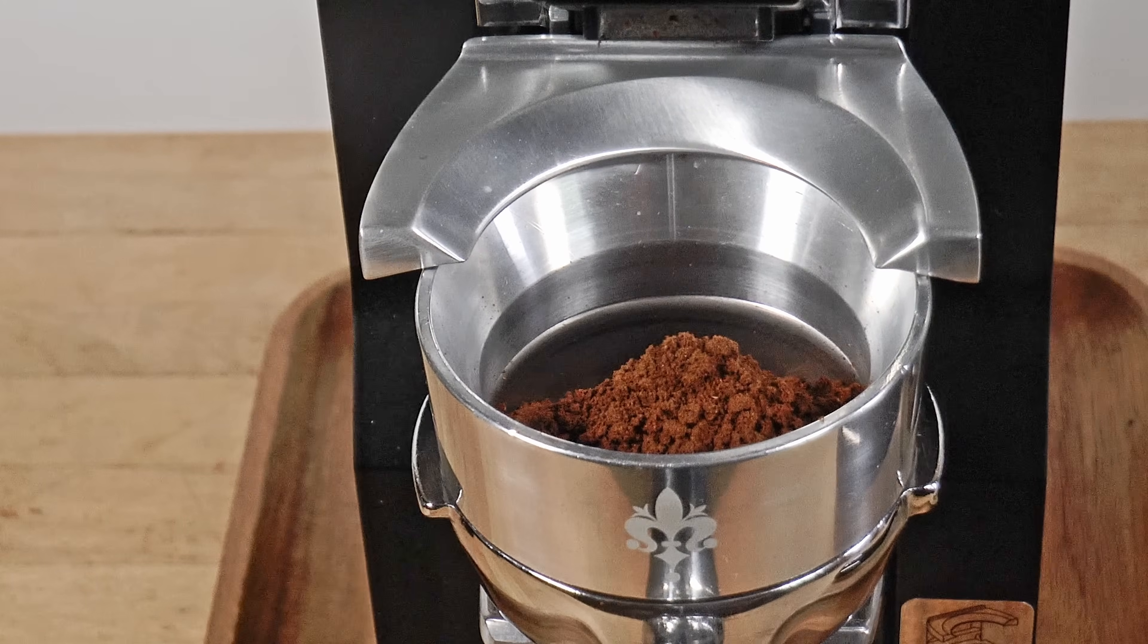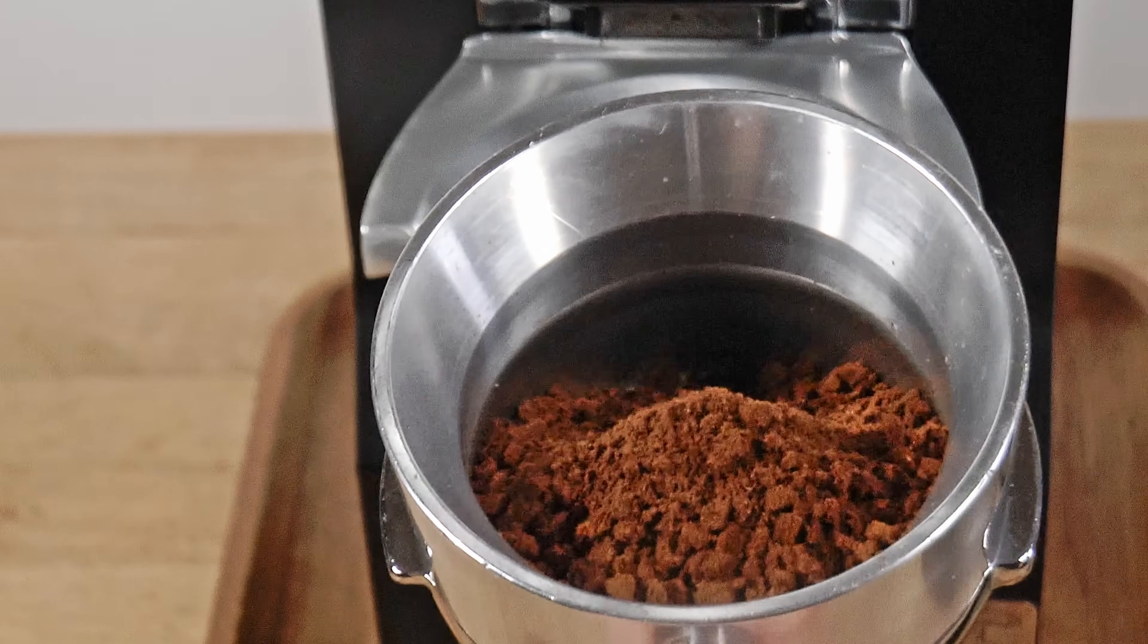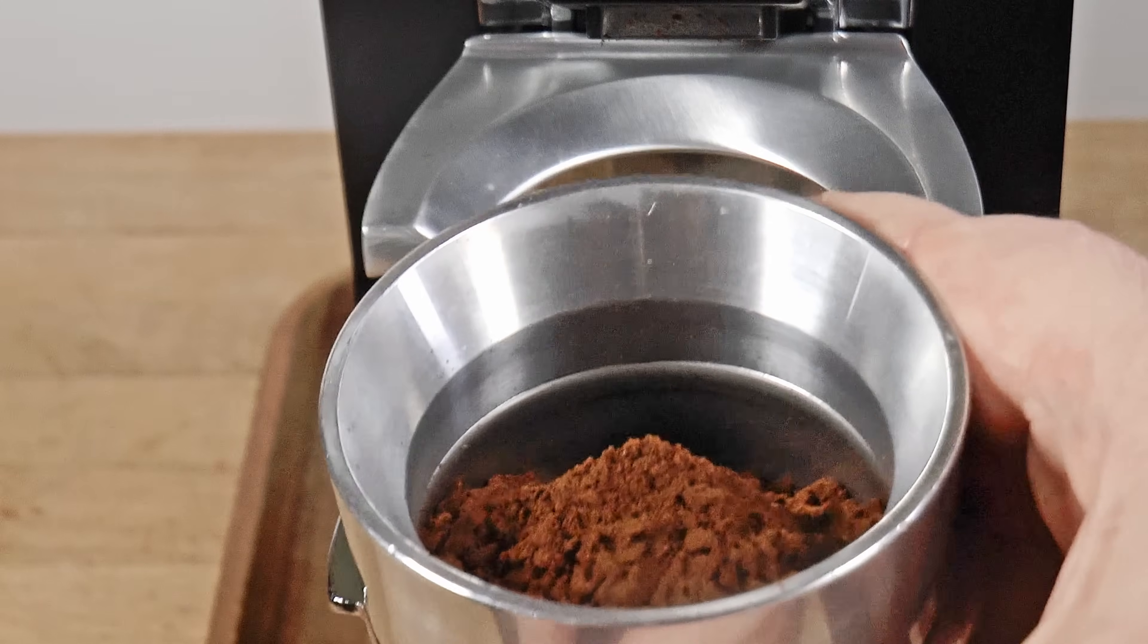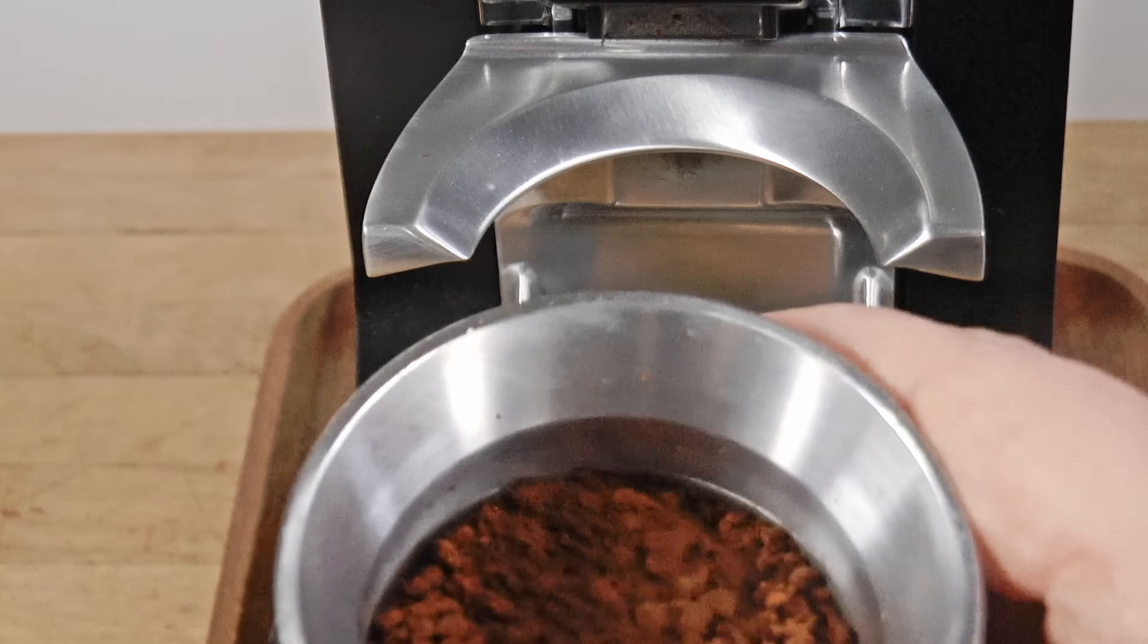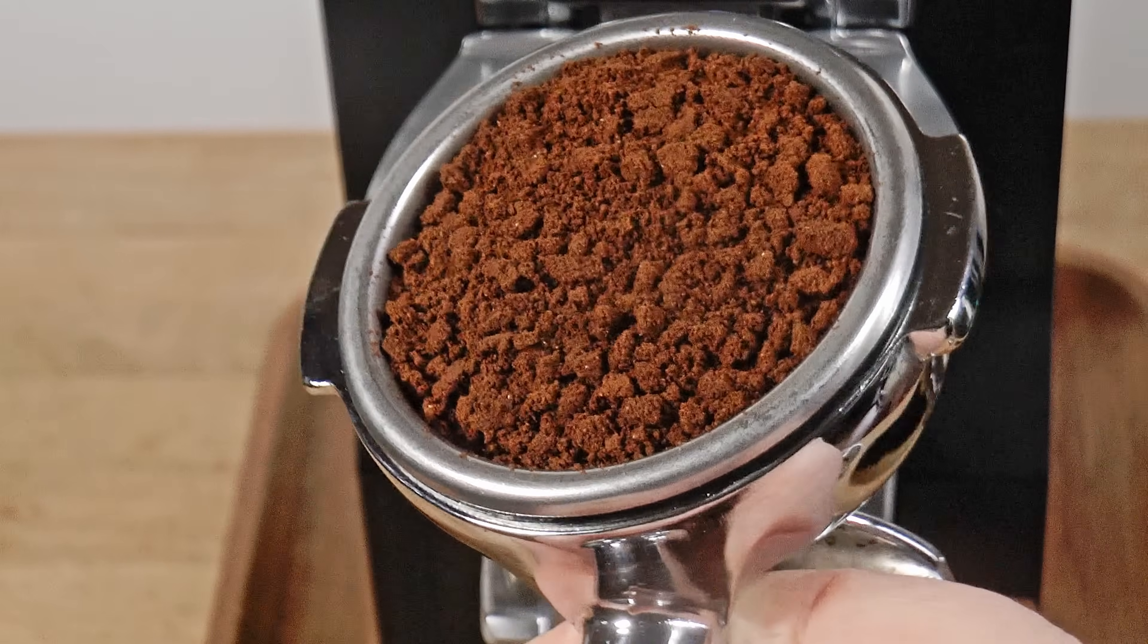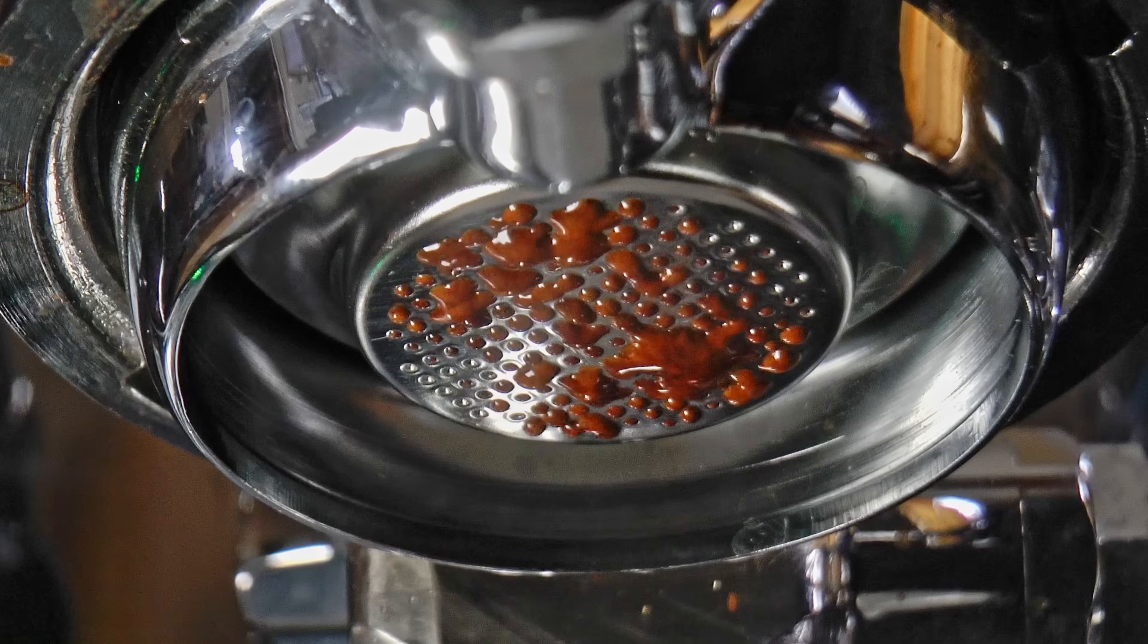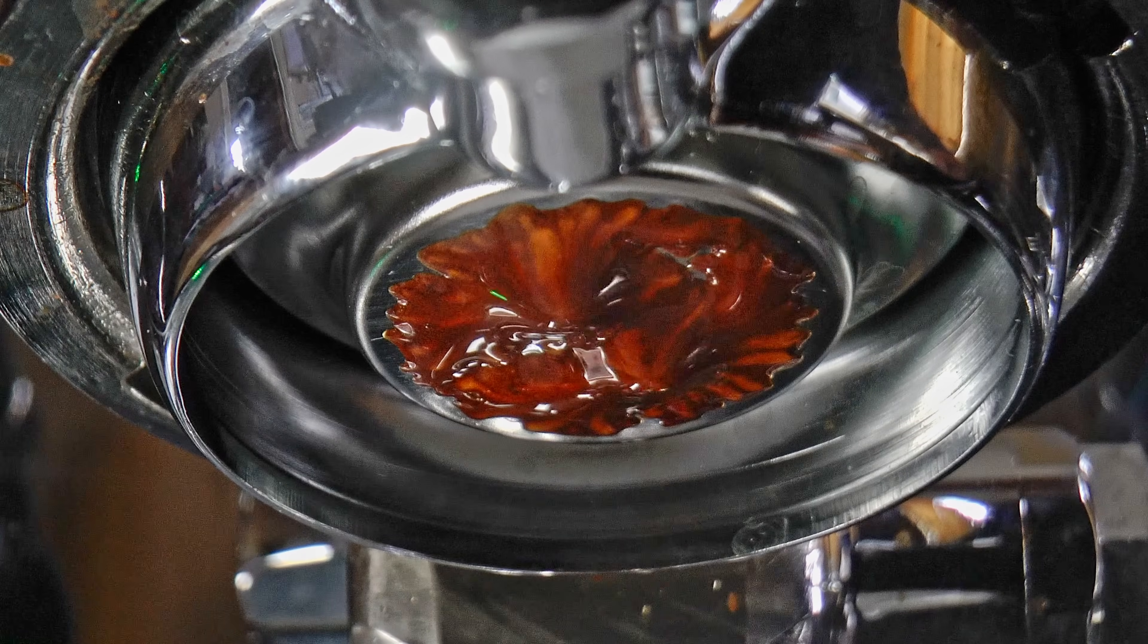Dialing in the grind and shot time is also tricky because the adjustment window is narrow there as well. You will be grinding larger than you're accustomed to. I find myself grinding between 1 and 2 numerals coarser on the Eureka and 5 to 10 marks coarser on the Niche Zero. This type of basket is very sensitive to small changes, which explains its unpopularity. But I think mastering it is well worth the effort.